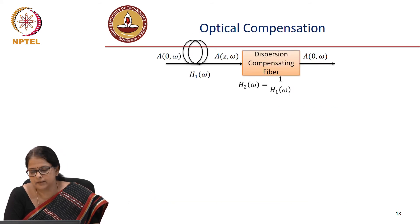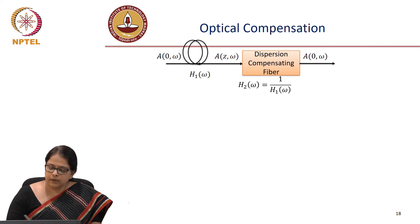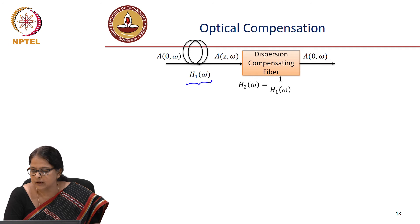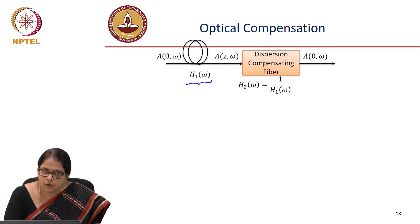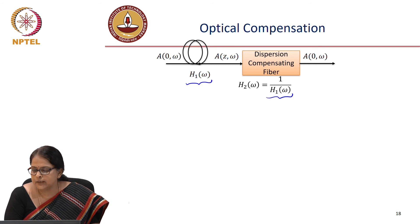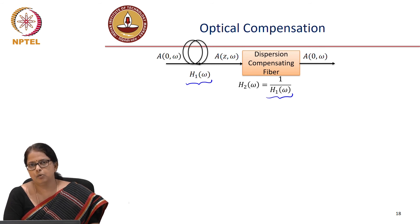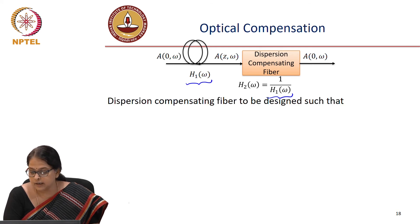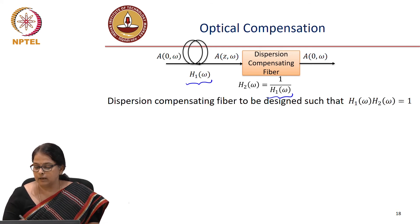In all-optical compensation, the fiber introduces a transfer function H1 of omega. We add a dispersion compensating fiber whose transfer function looks like 1 over H of omega, such that we get back the original signal. The question is how to make a fiber whose transfer function is 1 over H1 of omega — it must be designed such that H1 of omega times H2 of omega equals 1.